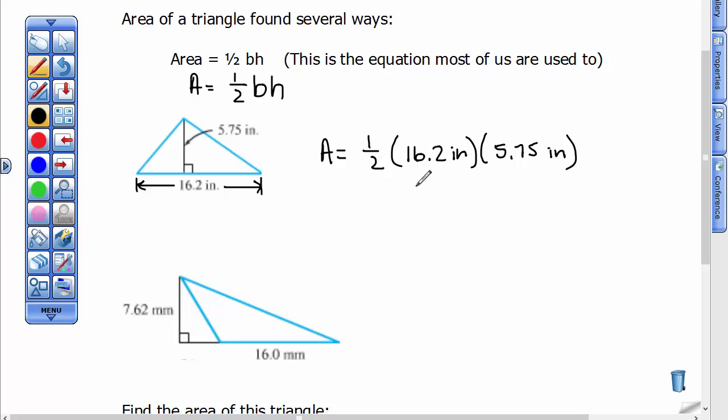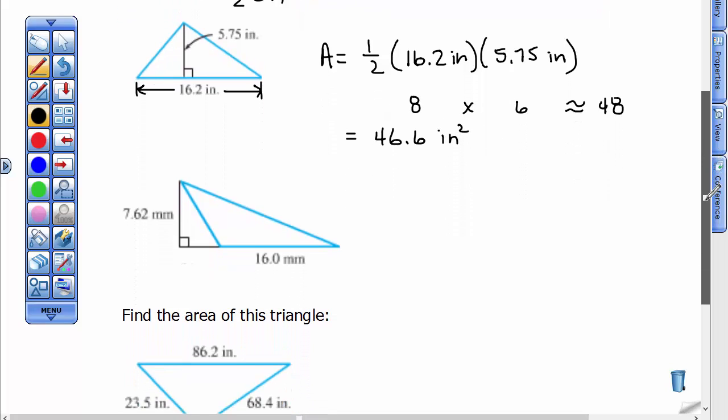And I also would do a little approximation. Half of 16 is about 8, and 8 times about 6 is approximately 48. But if you take your calculator and you type that out, you will find out that the area of this triangle is 46, and I'm going to call it 46.6, because these have three significant digits each. So I'm going to round this to 46.6, and remember that the area is in inches to the second power, or inches squared, because I multiplied inches times inches. This is the unit of measure for area. It is square units.